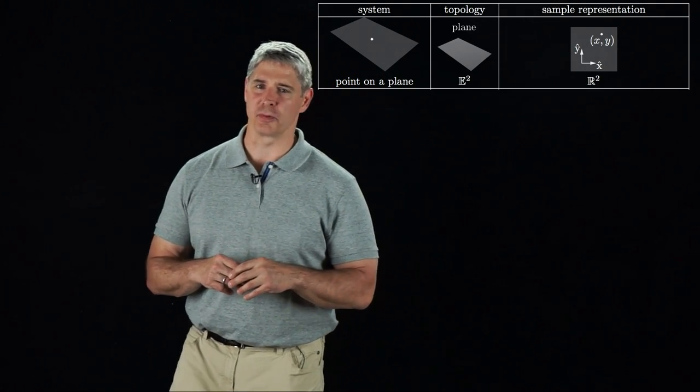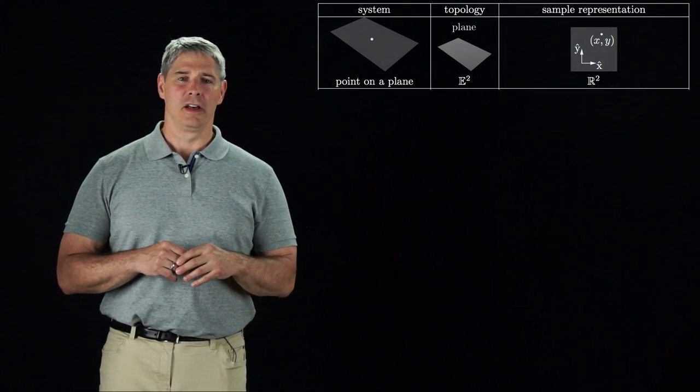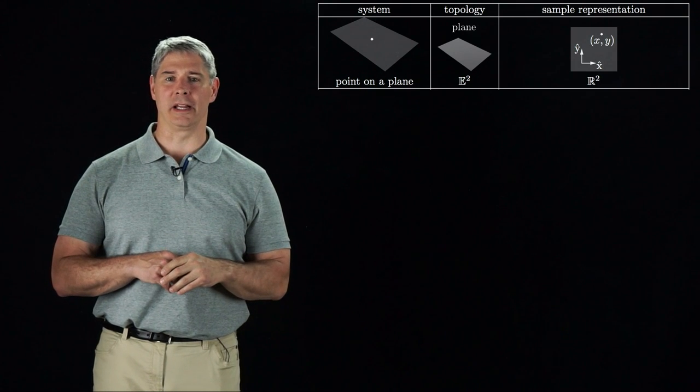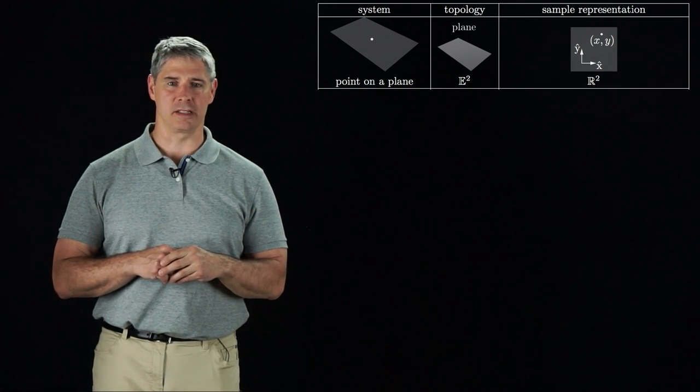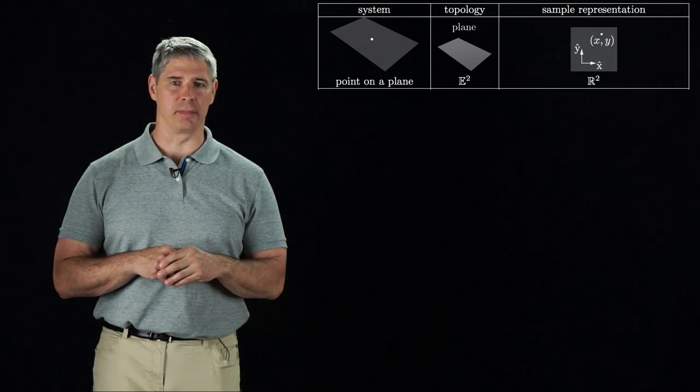Let's look at some examples of physical systems with two-dimensional C-spaces. The first is a point moving in a plane. The topology of the C-space is just a two-dimensional Euclidean space, and a configuration can be represented by two real numbers.